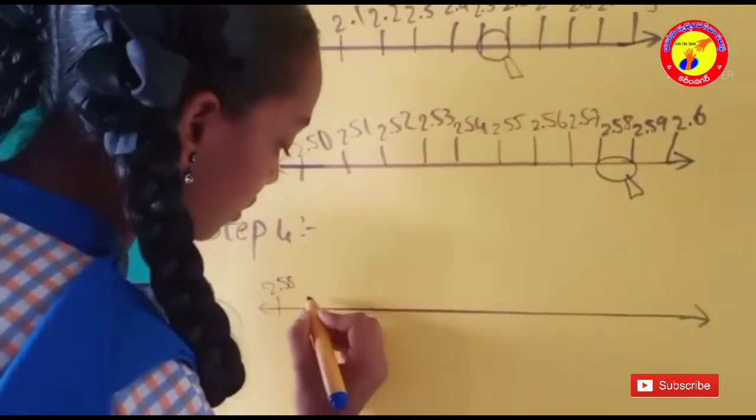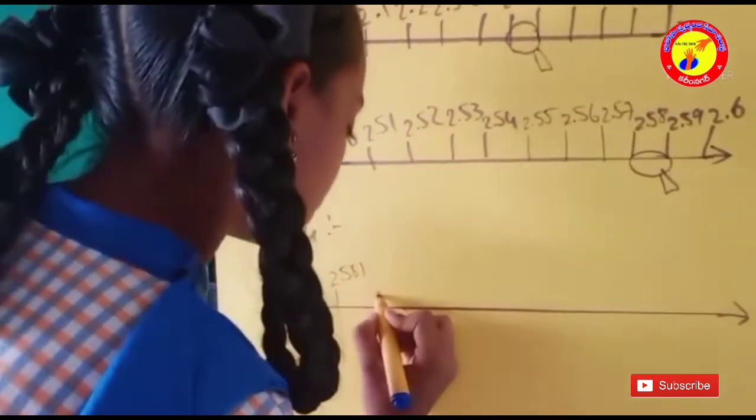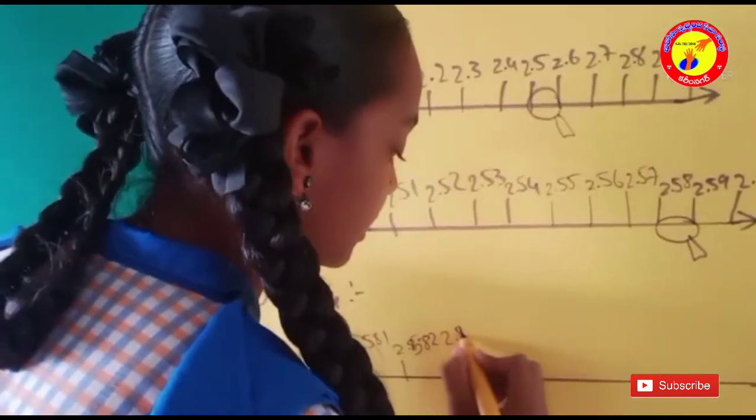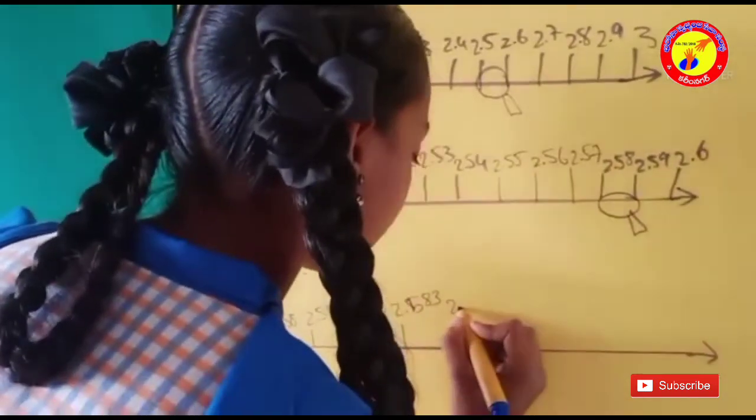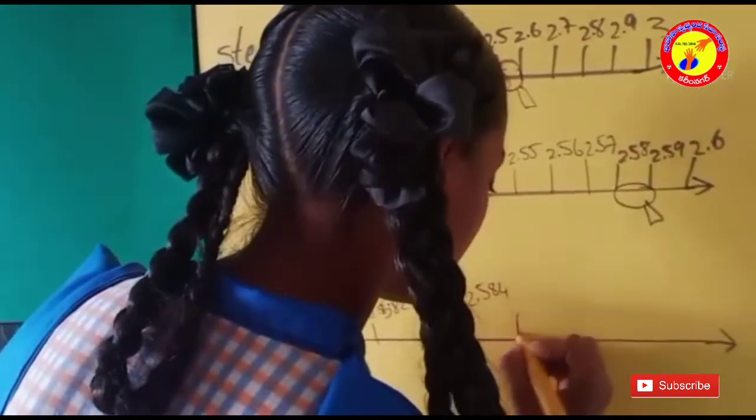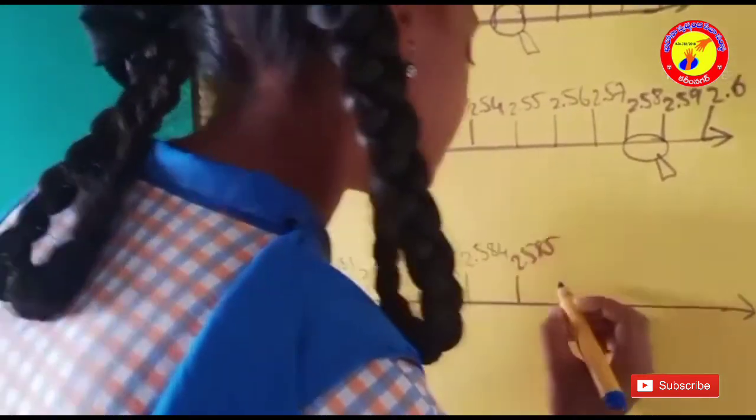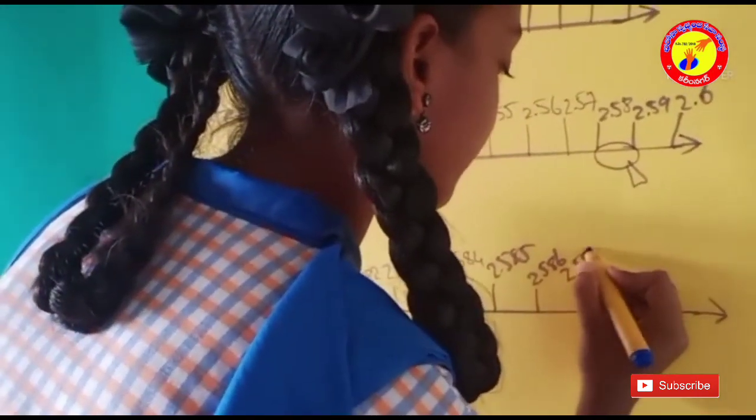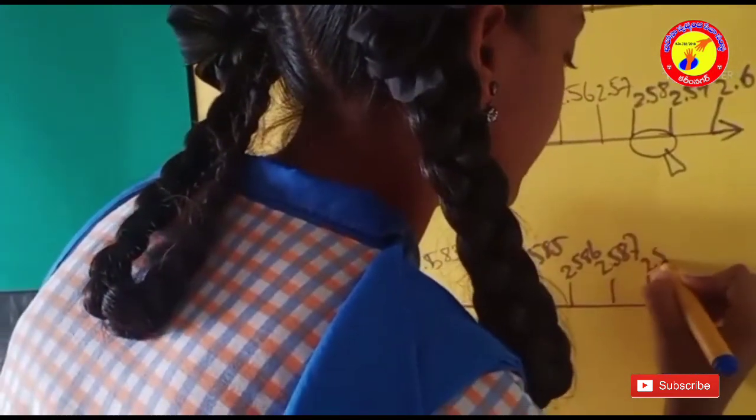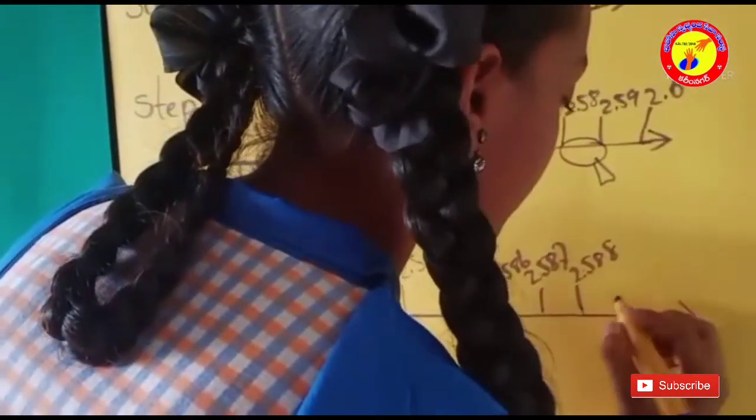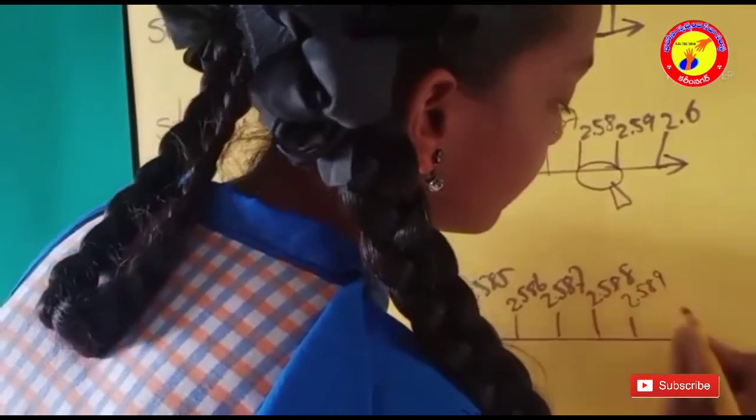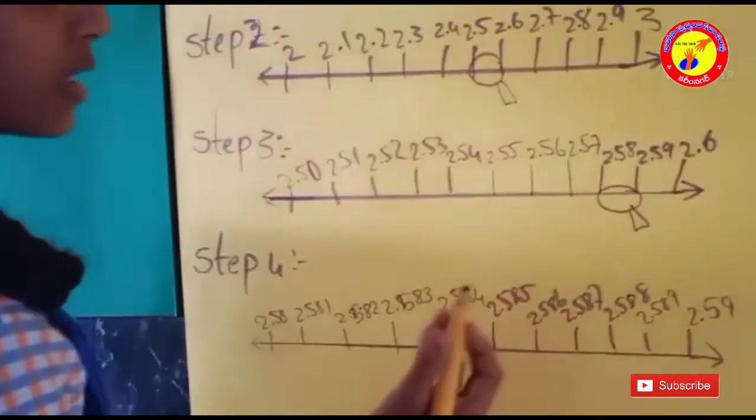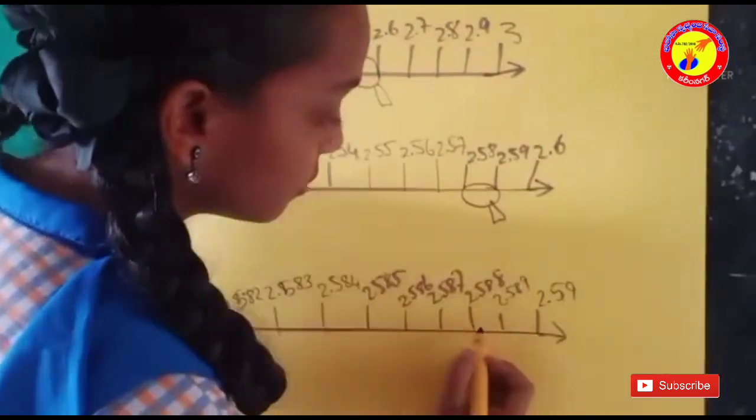Mark 2.58, 2.581, 2.582, 2.583, 2.584, 2.585, 2.586, 2.587, 2.588, 2.589, 2.59. There is 8, and there is 2.588.